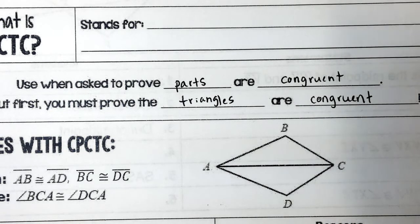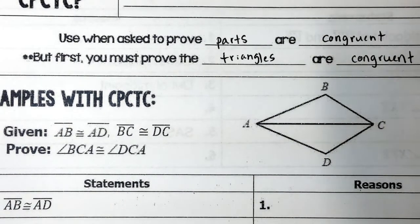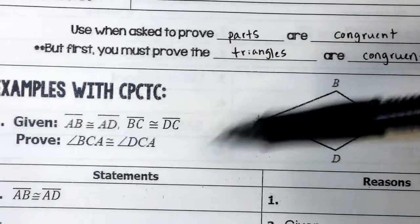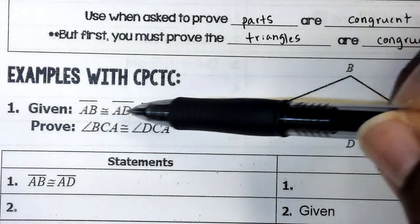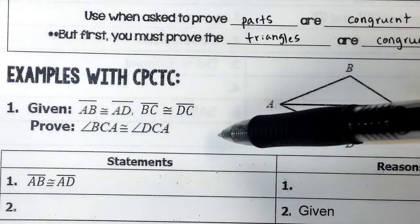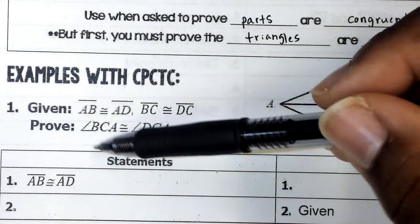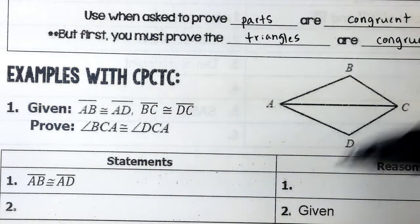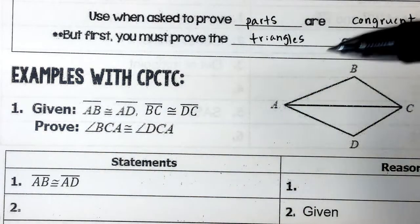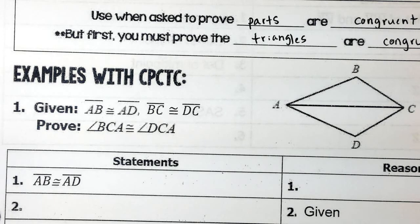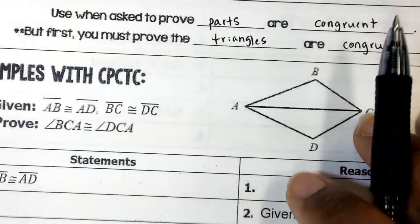These proofs look a little bit different at the end but start out the same. On this first sample CPCTC proof, they give us information: AB is congruent to AD, BC is congruent to DC. Then they tell us what to prove — and that's different. Before, what you were trying to prove always said a triangle was congruent to a triangle. This time they want me to prove that angle BCA is congruent to angle DCA. I'm not trying to prove the triangles are congruent; I'm trying to prove these two angles are congruent. But before I can prove those angles congruent, I have to prove the triangles to be congruent.